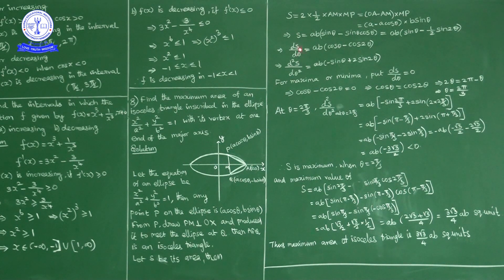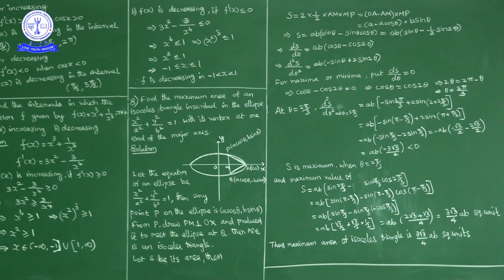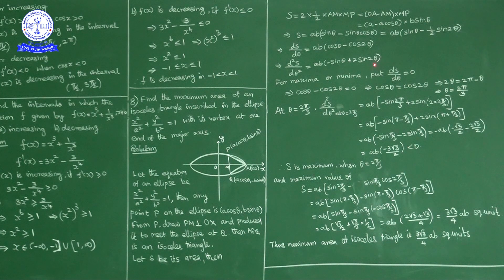dS/dθ = ab(cosθ − cos2θ). d²S/dθ² = ab(−sinθ + 2sin2θ).